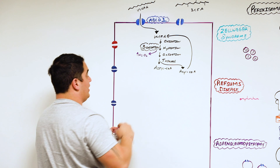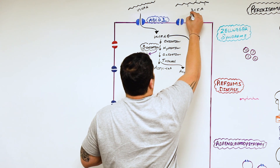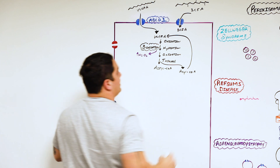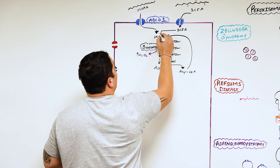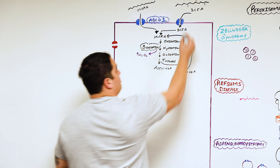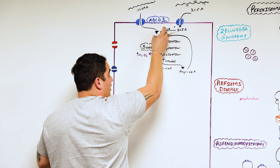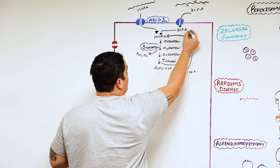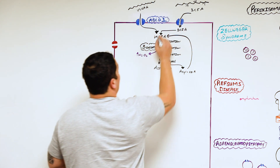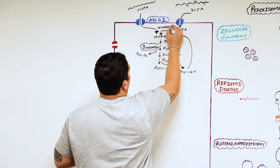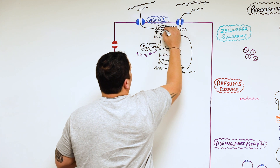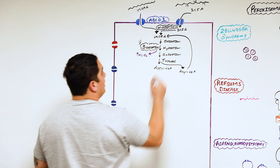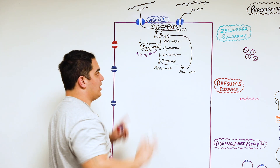So the first function is beta oxidation within the peroxisomes. The second function involves branch chain fatty acids, which can get converted into very long chain fatty acids — basically cutting off the branches — and then they undergo beta oxidation. This step where you go from branch chain fatty acids to very long chain fatty acids is called alpha oxidation.